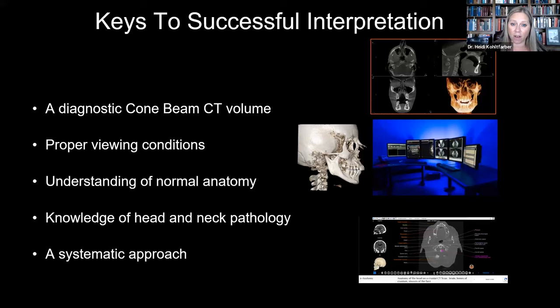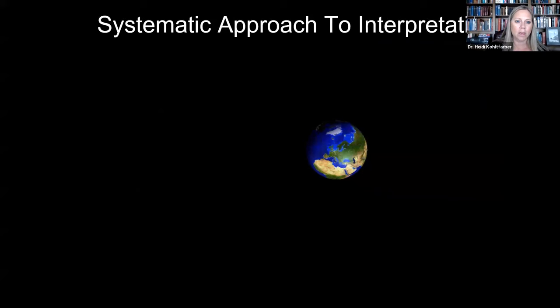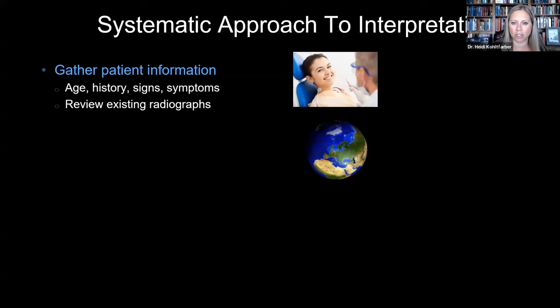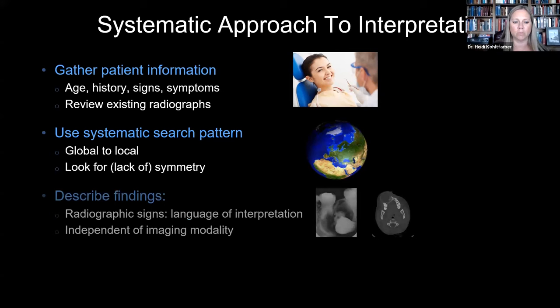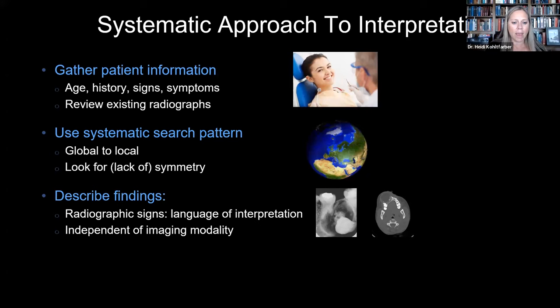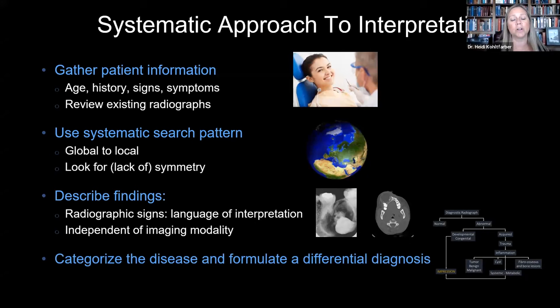Have a knowledge of head and neck pathology — it's not that different 2D versus 3D. If it looks like a cyst in 2D, it's going to look like a cyst in 3D as well. And then have a systematic approach to reviewing your CBCT. With that systematic approach, we want to look at our entire patient, gather patient information, and have a systematic search pattern — just like you do with your panoramics or intraoral imaging — going from a global to a local evaluation.